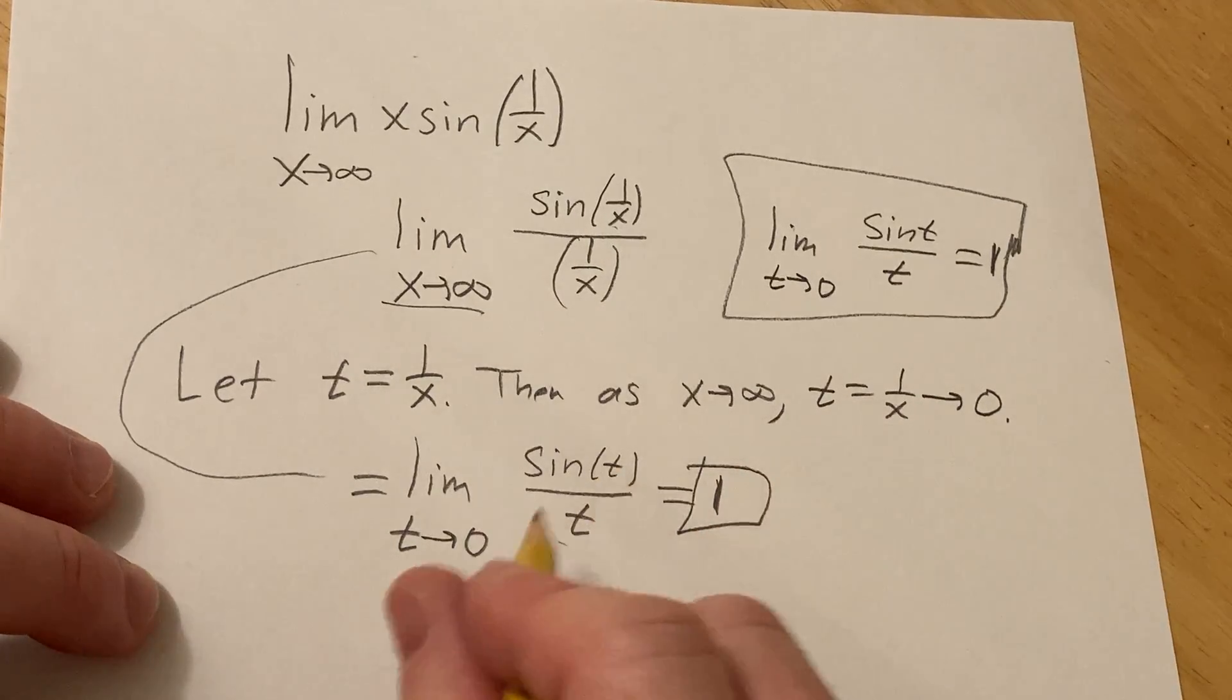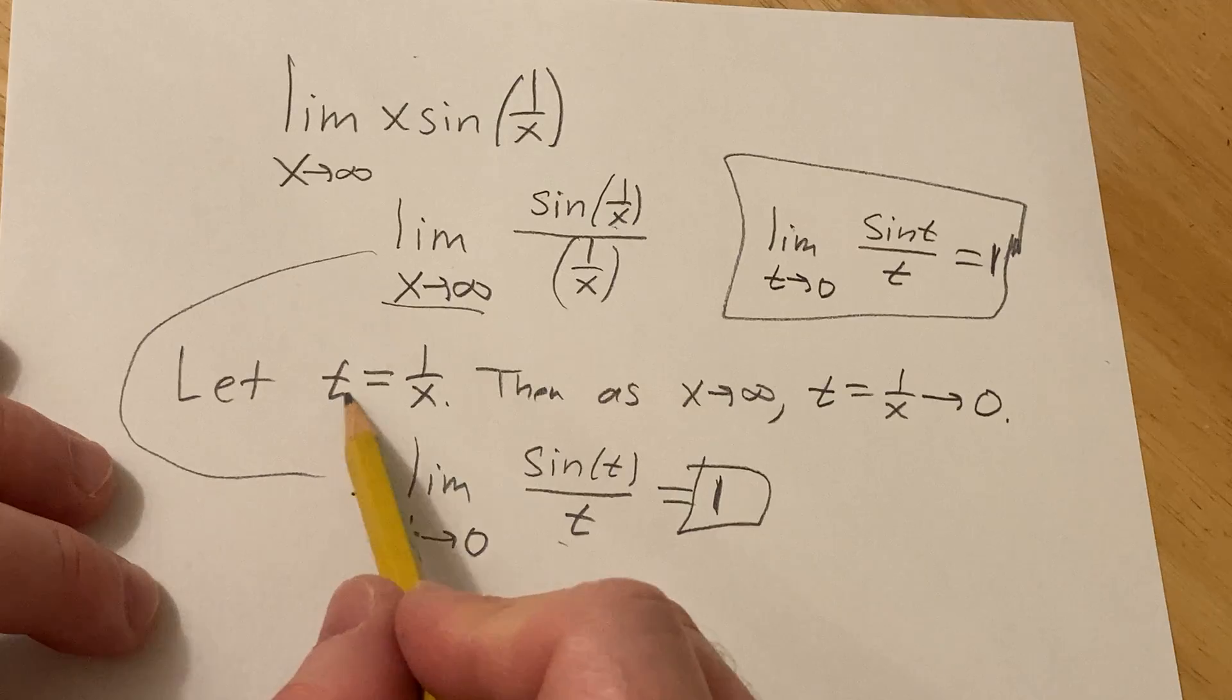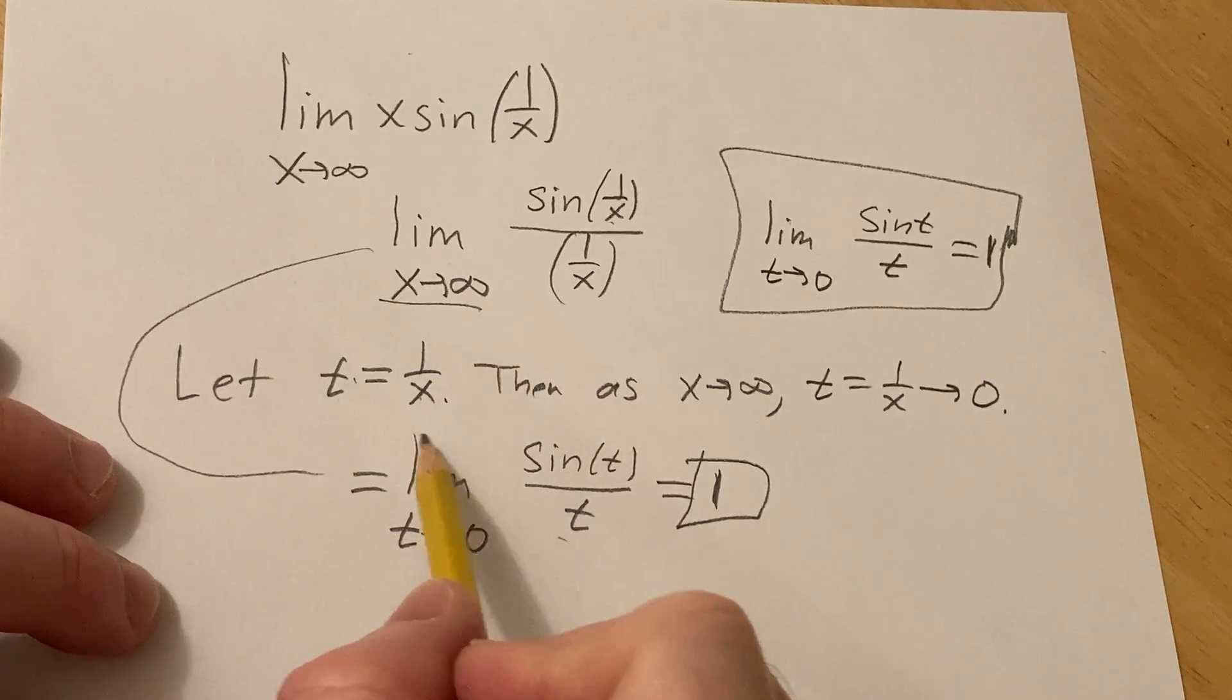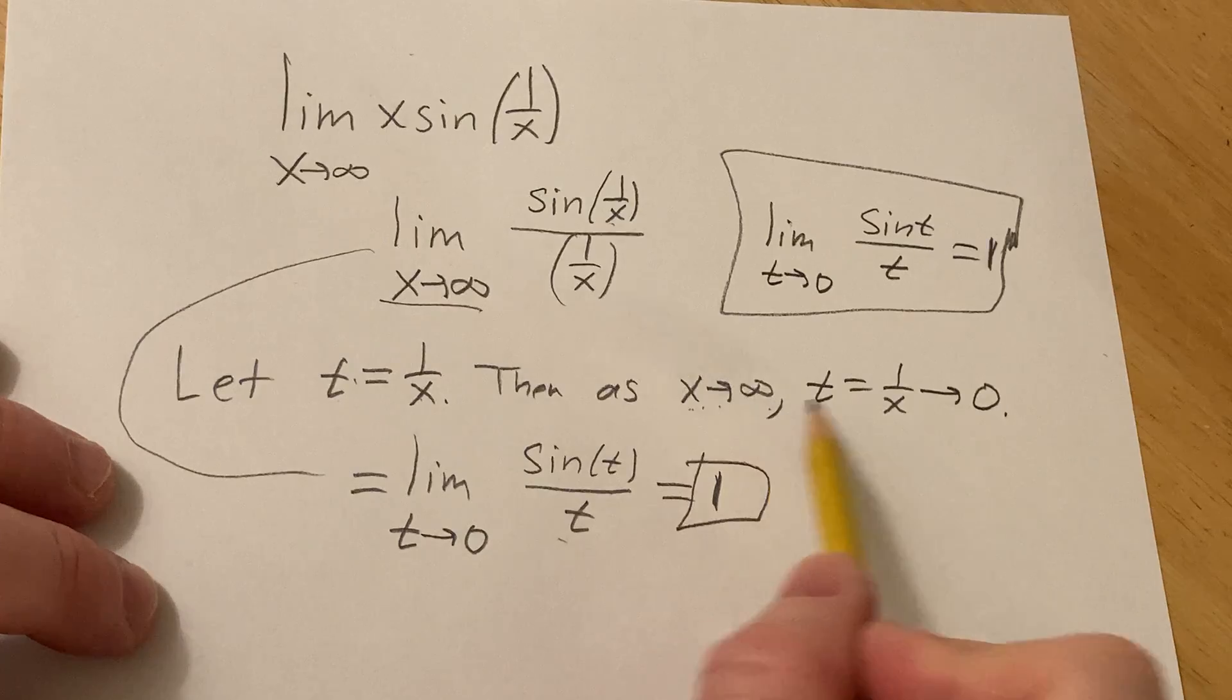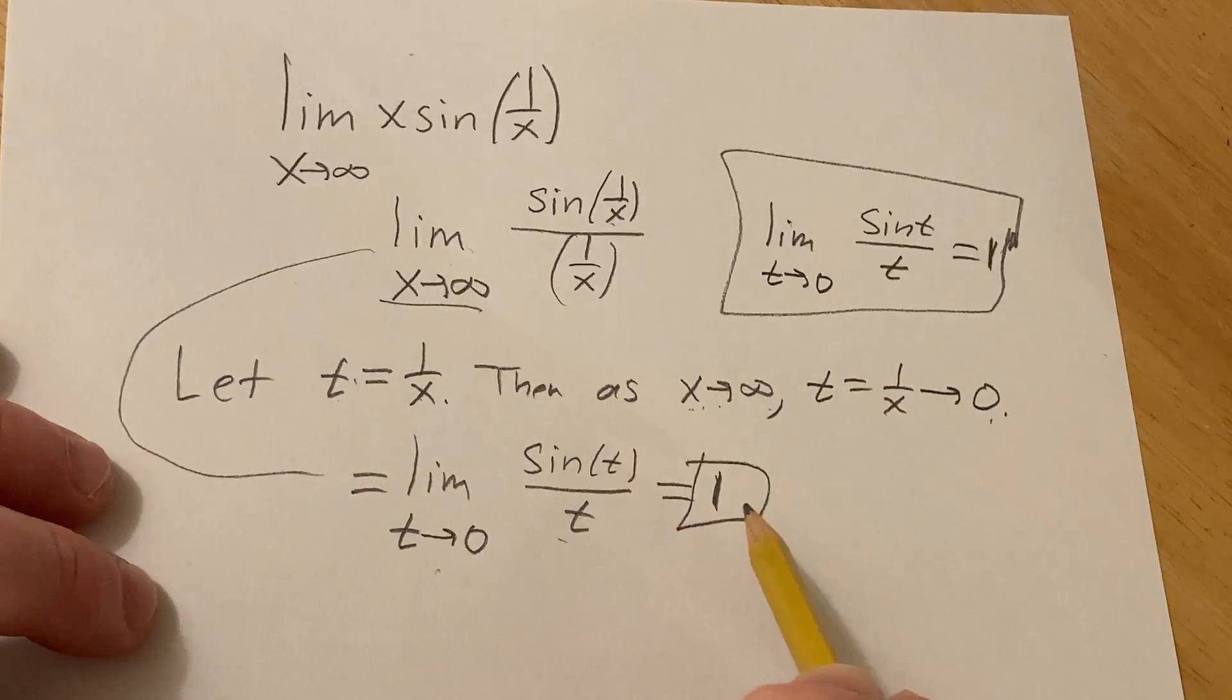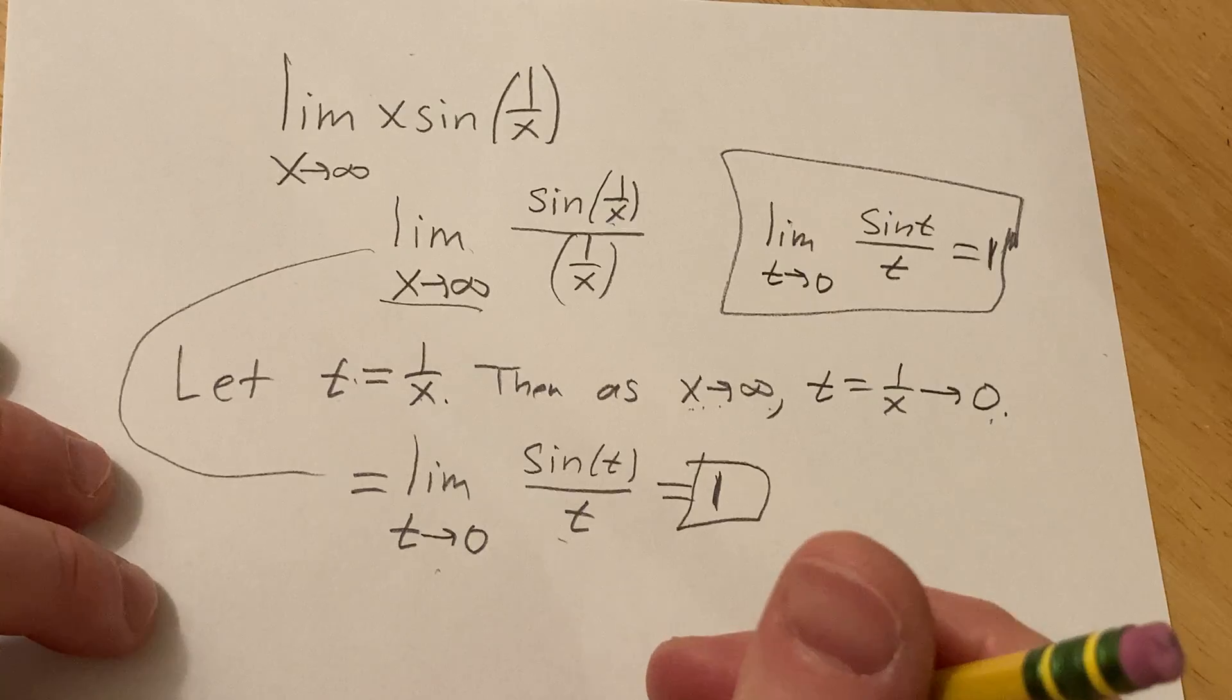Because basically, if you make the substitution in the limit, if you let t be equal to 1 over x, then as x approaches infinity, this approaches 0. So basically, this limit can be replaced with this one, and then you get 1.